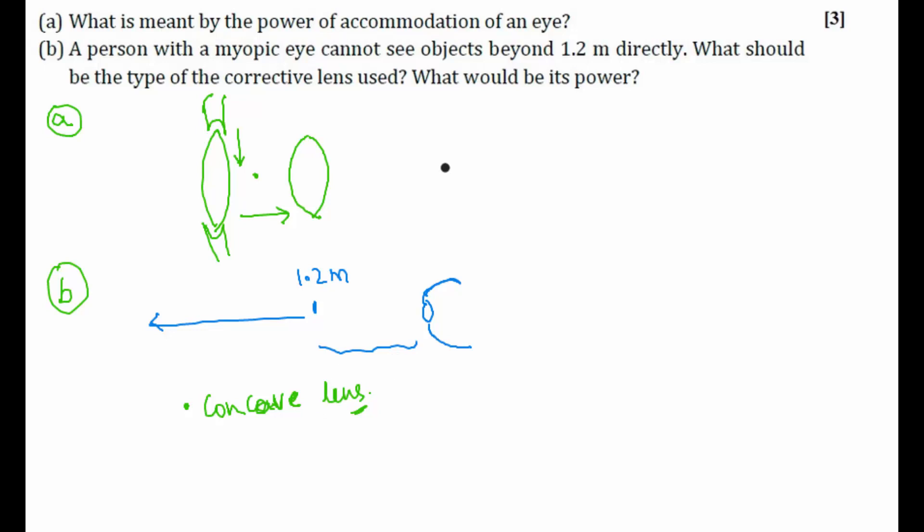Now what would be its power? Here he gave us the distance is 1.2 meters, right? So focal length will be how much? The focal length of concave lens used here will be 1.2 meters. Plus or minus? For a concave lens, focal length is always negative, so it will be minus.